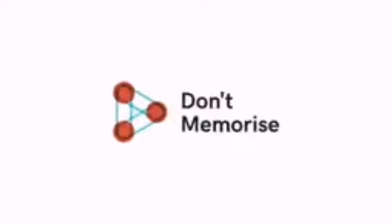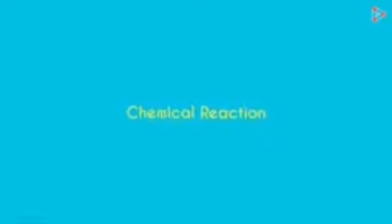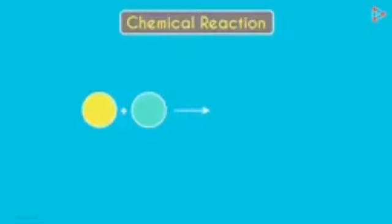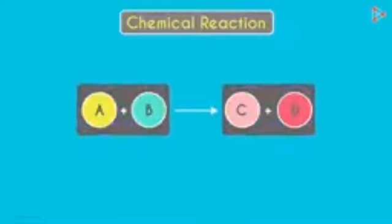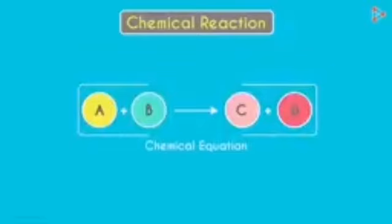Hi dear children, welcome back to our chemistry class. This is our new lesson: chemical reaction. What is chemical reaction? Two reactants combine to form two products — that is A and B combine to form C and D. These two reactants combine to form two new products. This is a chemical equation. Chemical reactions are represented by chemical equations.